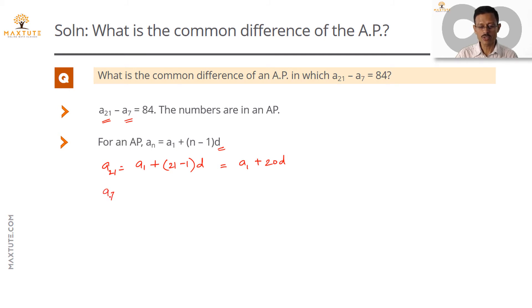Quickly repeat the same exercise for A7. A7 is equal to A1 plus 7 minus 1 into d, which is going to be equal to A1 plus 6d.